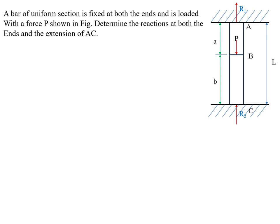Example problem: A bar of uniform section is fixed at both ends and is loaded with a force P. Determine the reactions at both ends and find the extension of member AC. Observe the figure — member ABC is loaded with force P at point B, and the member is fixed at both ends.